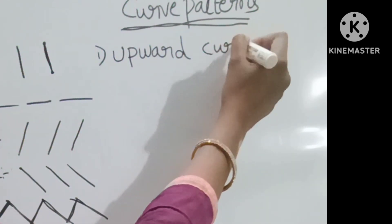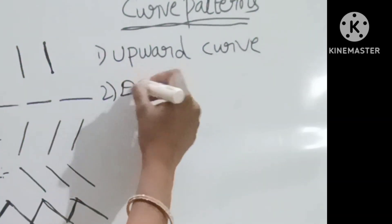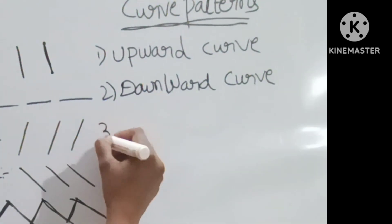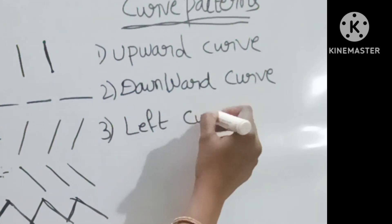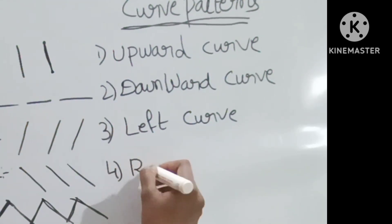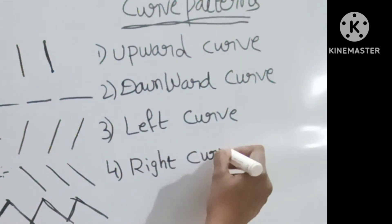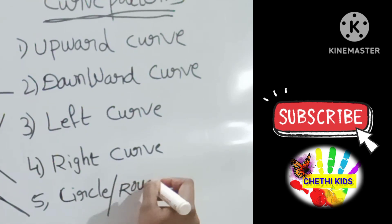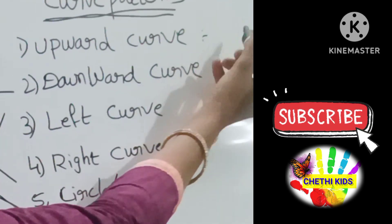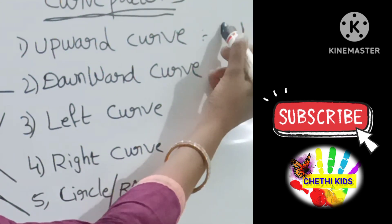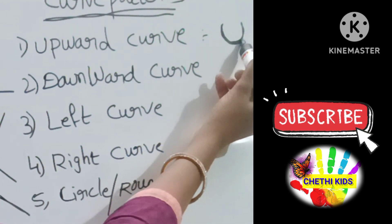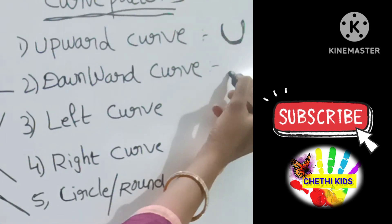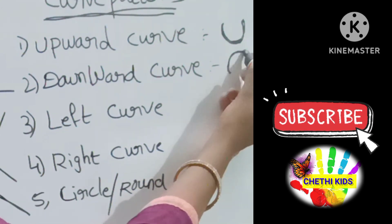First one: upward curve. Second one: downward curve. Third one: left curve. Fourth one: right curve. Next one: circle or round. Let's see the upward curve — starting from the top, it goes down and goes up. This is the upward curve. Next, downward curve: starting from here, goes up and comes down. This is the downward curve.